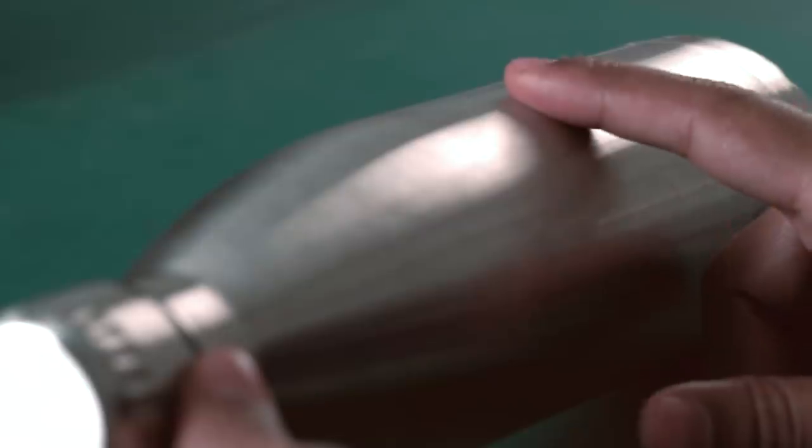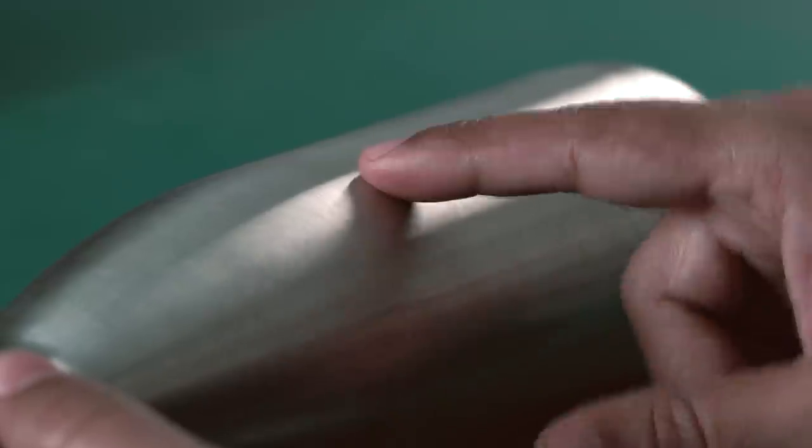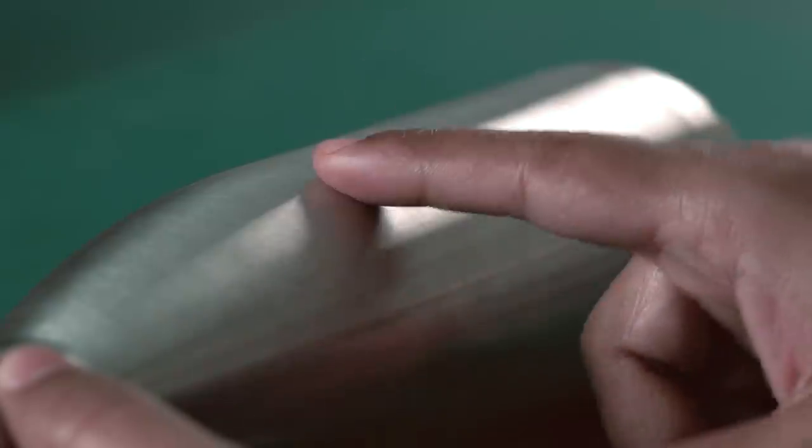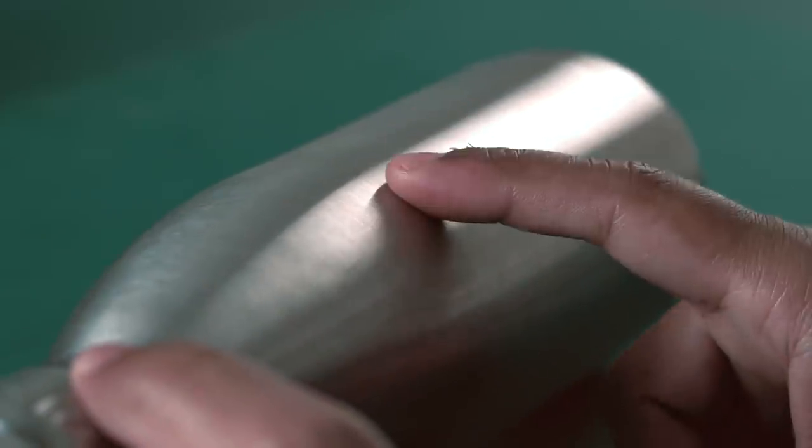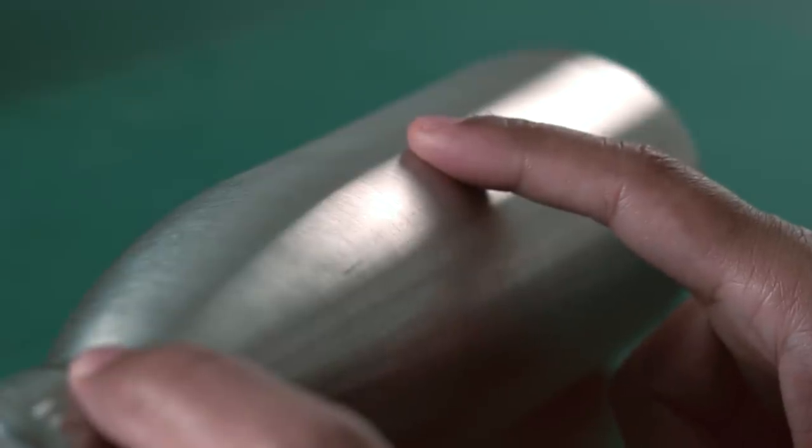Alright, for the next step, we are going to take our surface where we will etch the design. For that, I am taking this metal zipper and on top of this, I am going to etch our design. Now, whenever you are etching a design, you have to make sure that your surface is clean. So, I have wiped this clean. As you can see, it looks nice and clean.